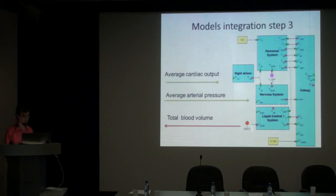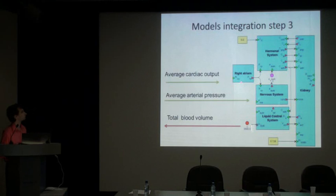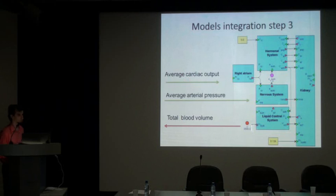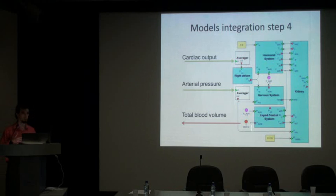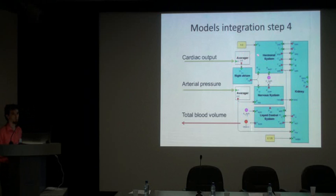However, our pulsating heart model doesn't contain the right atrium, so we need to add a special module which was extracted from the heart model in the regulation model, to obtain right atrial pressure from it — but it demands cardiac output. So now we have changed the interface of our model and need an average cardiac output parameter. In the pulsating heart model we have oscillating parameters, while here we need average parameters. So we add averaging modules, whose input is the oscillating parameters and output is a calculated moving average over the simulation.